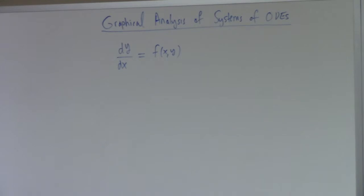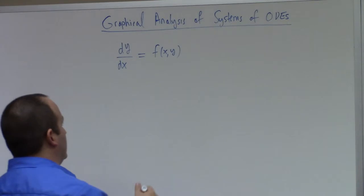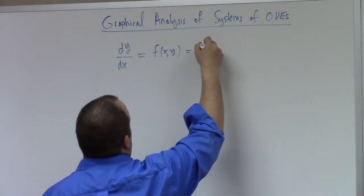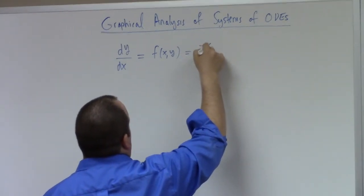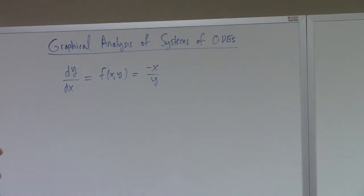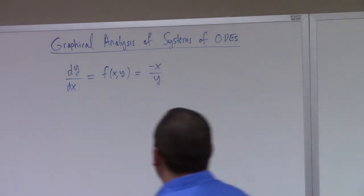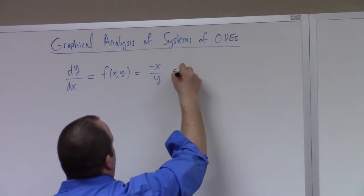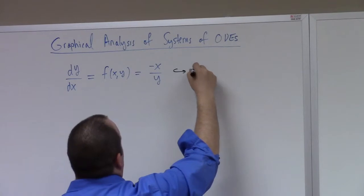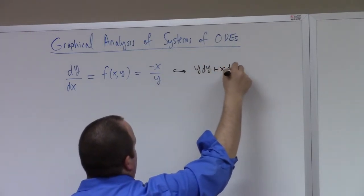That has solutions. For example, just to look at an example, we could have like minus X over Y. That was one of the first problems we solved. In Pfaffian form, this would give you Y dy plus X dx equals zero.